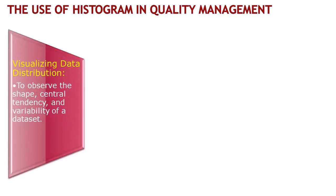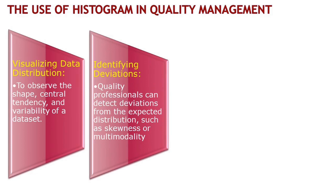In this slide, we will explore the practical applications of histogram in quality management. Imagine you have a dataset and you want to understand its distribution — that's where histograms come in handy. They visually represent data in a way that allows us to observe the shape, central tendency and variability. Histograms are like a detective tool for quality professionals. By analyzing the shape of a histogram, we can easily spot deviations from the expected distribution. It's like finding clues to potential issues in our data.